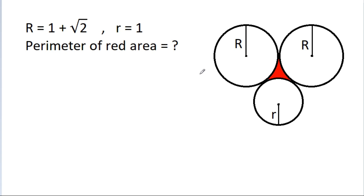In this video, we have given that R is 1 plus sqrt of 2 and small r is 1. Then we have to find the perimeter of this red area.